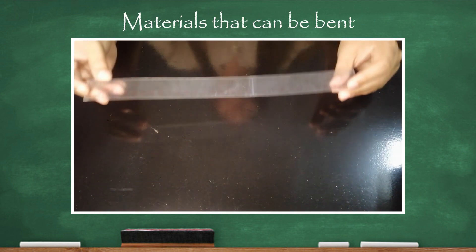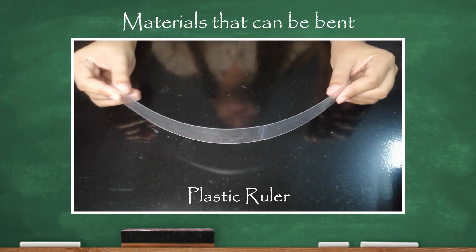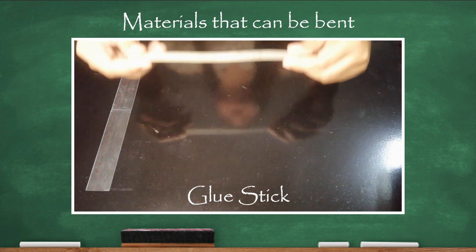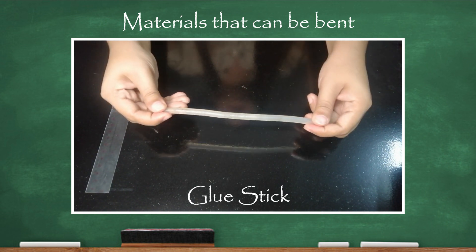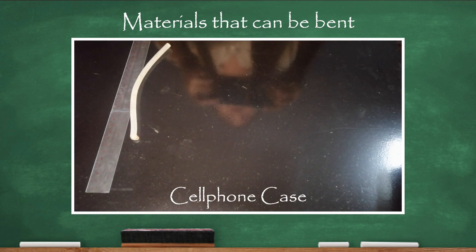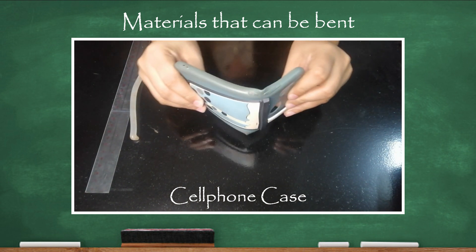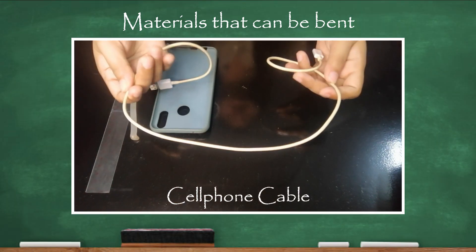These are examples of materials that can be bent. First, a plastic ruler. Second, a glue stick. Third, a cell phone case. And last, a cell phone cable.